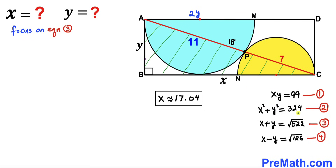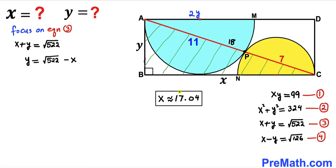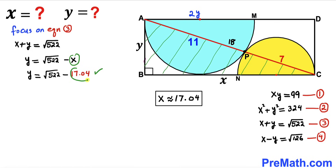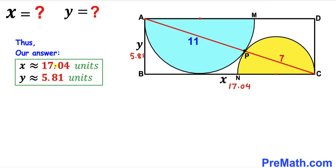Using equation three, x + y = √522. Moving x to the right side gives y = √522 − x. Substituting x ≈ 17.04, y is approximately equal to 5.81. These are our final values for x and y.